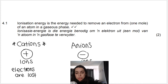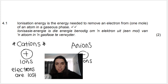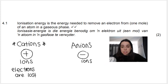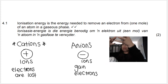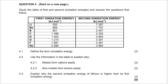Electrons are negative, so if you lose negative stuff you become positive. Anions on the other hand are negative — anions form when we gain electrons. If we get extra electrons we become more negative, we become anions. So the question wants us to explain why metals form cations easily — in other words, why do metals lose electrons easily? How can we tell that from the table? Looking at the table, let's pull out the things we know are metals.